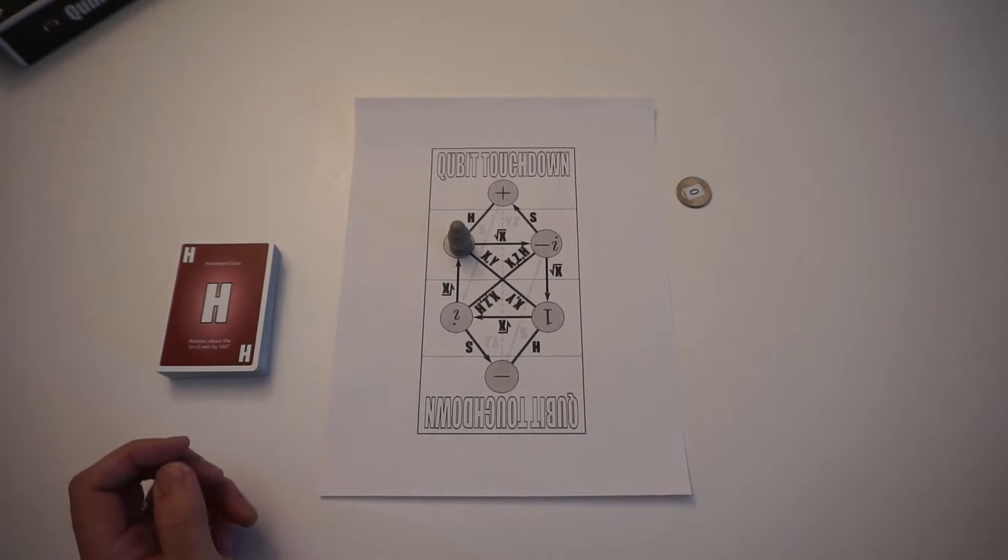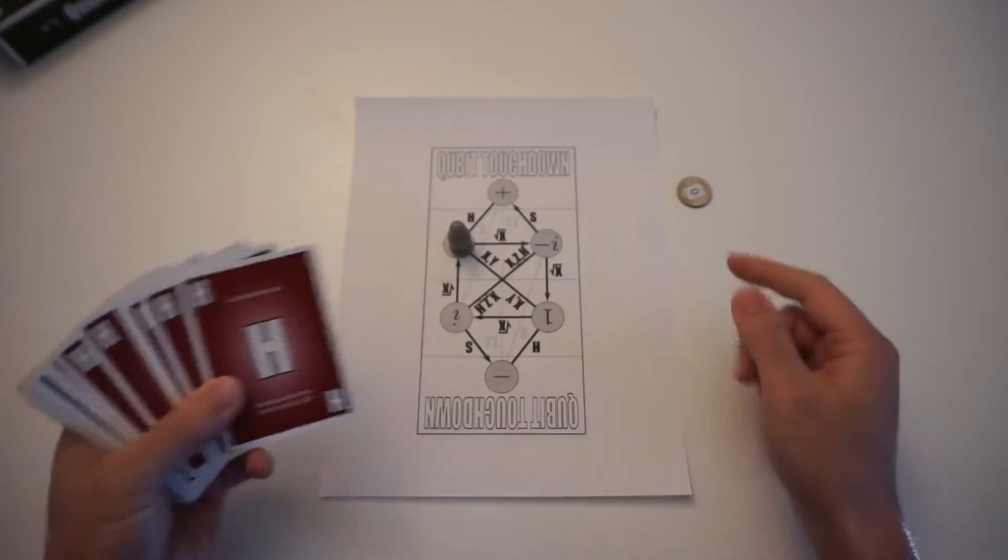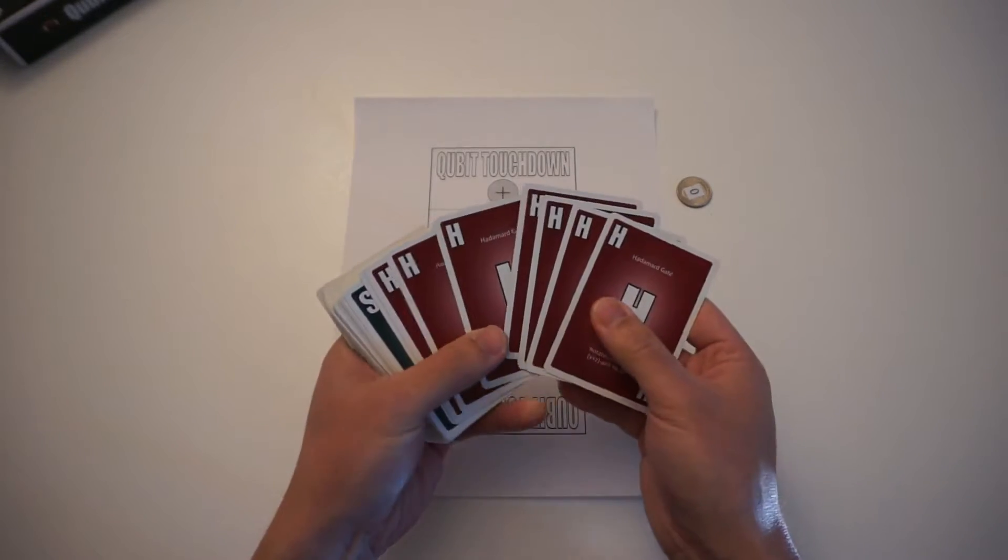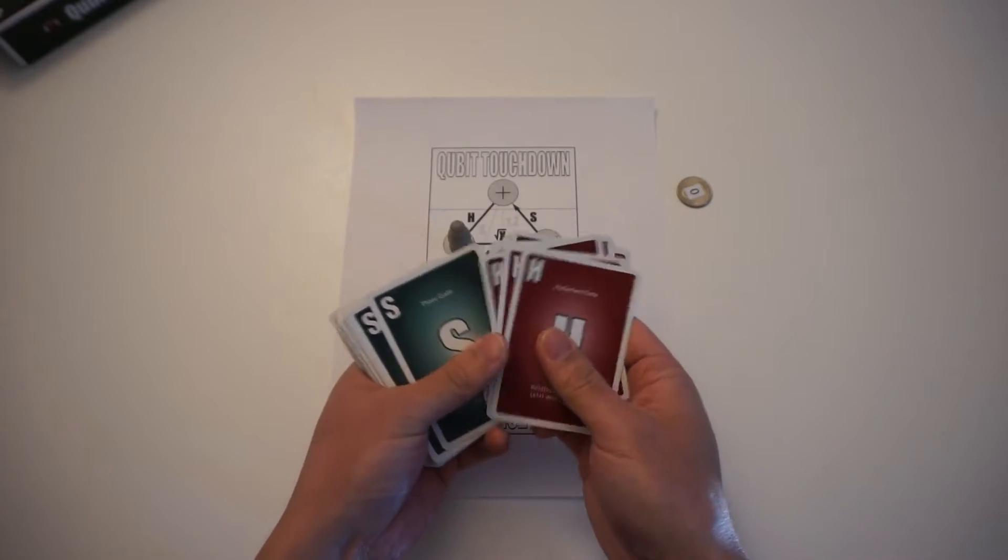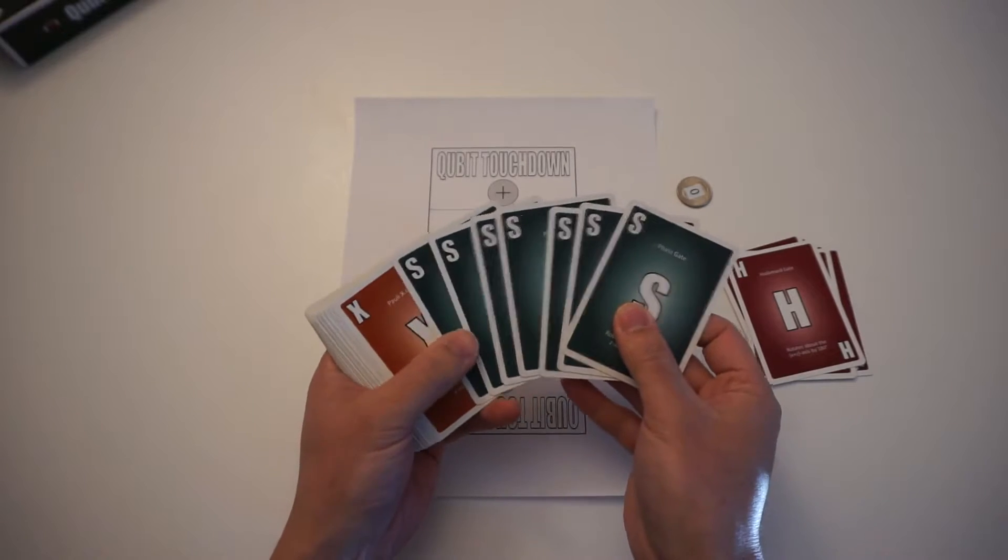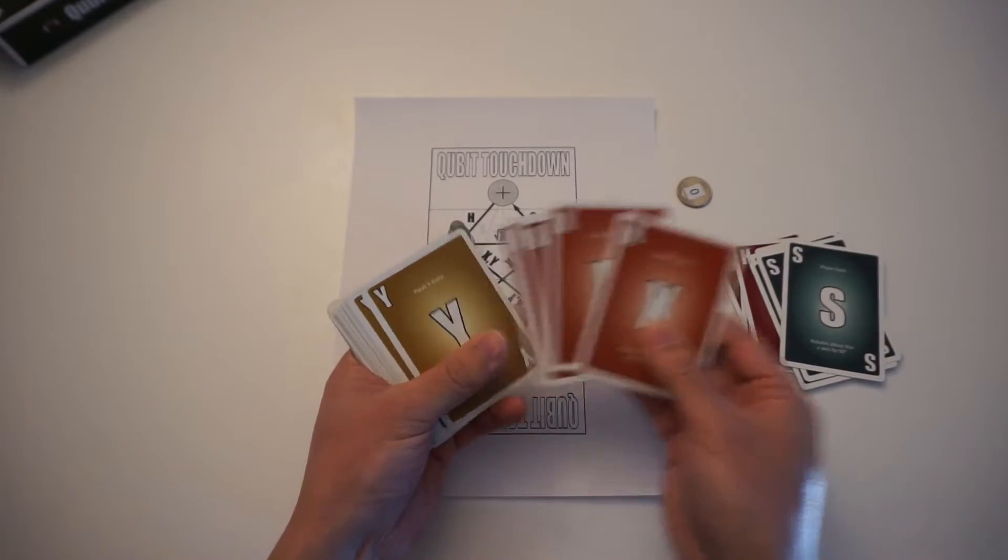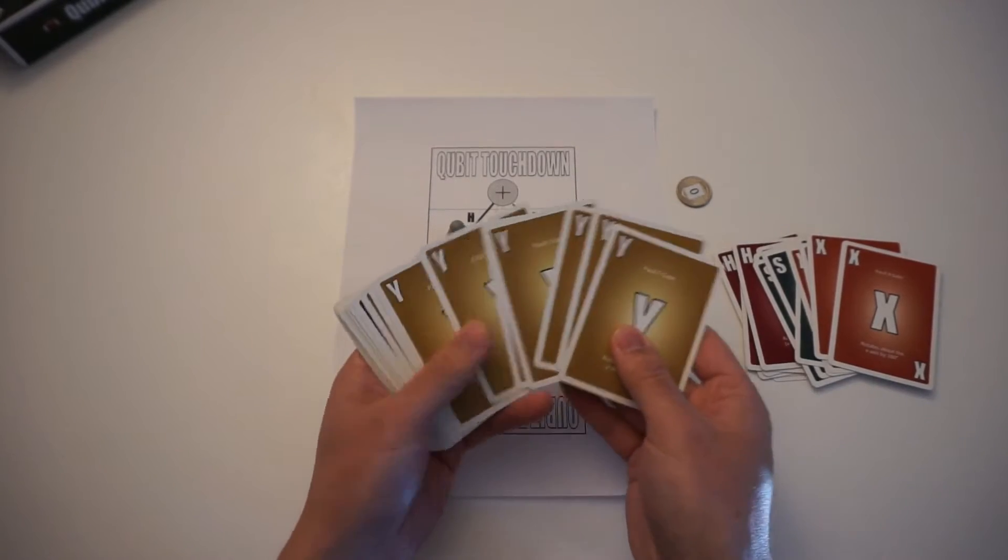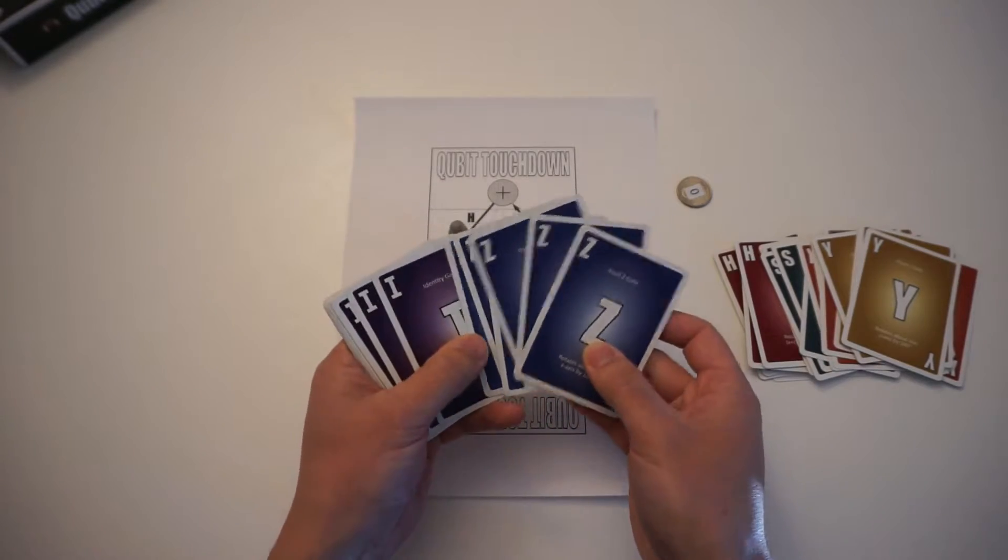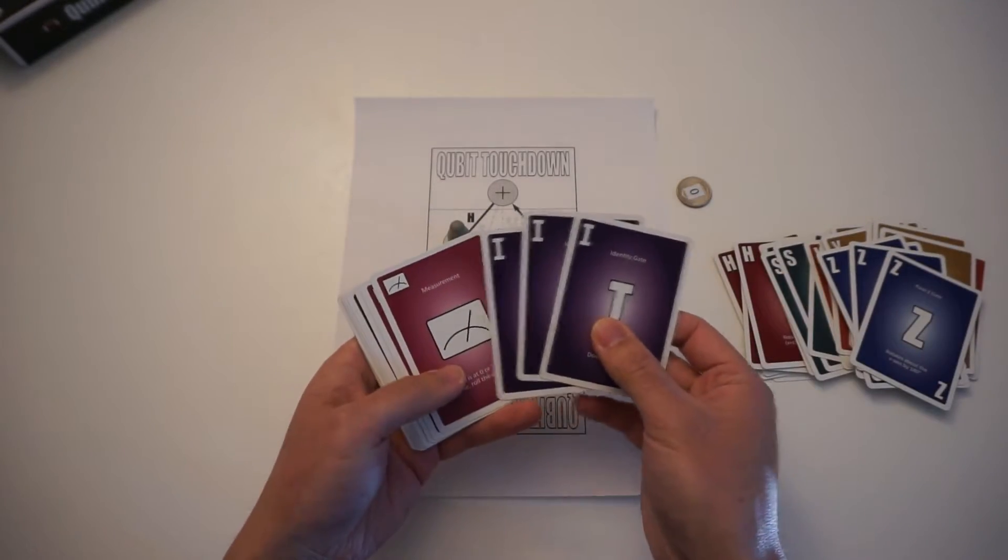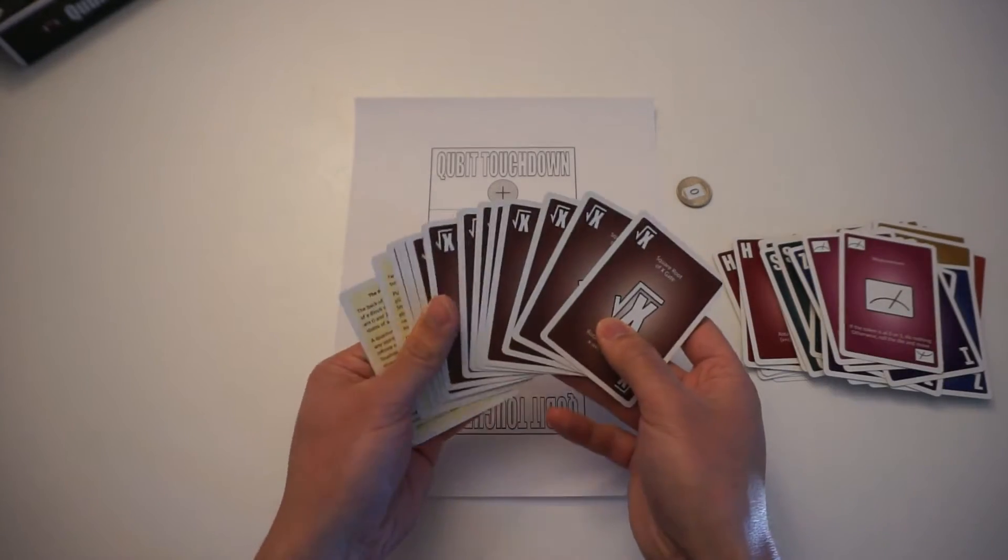And the final thing you need to play are the action cards. So there are eight different actions. There are a bunch of H cards or Hadamard Gates and you need seven of these. You need seven of these S cards, you need four X cards, you need nine Y cards, you need seven Z cards, you need three I cards, another three measurement cards, and twelve square root of X cards.